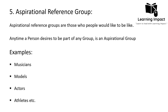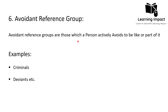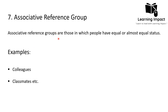The avoidant reference group refers to groups that individuals actively avoid being part of or being like. These are essentially negative reference groups — criminals, deviants, and those who are looked down upon by society. They become avoidant reference groups for other members of society.